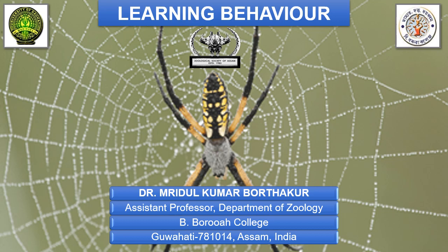This lecture, I believe, will be beneficial for the under-graduate and post-graduate students. The behavior of animals is broadly divided into two categories: innate and learned behavior. Innate behavior means inborn behavior — it is controlled by genes and transmits from one generation to the next. Learned behavior is not inborn or innate type; it is acquired by the animals through experience.